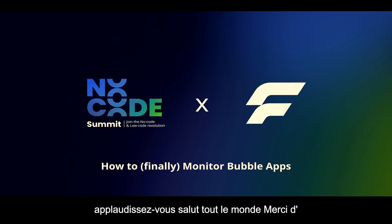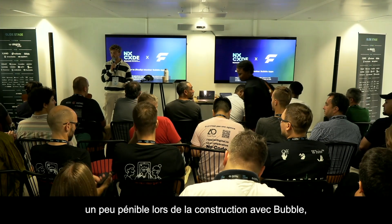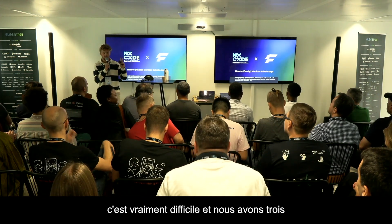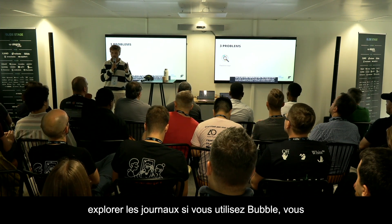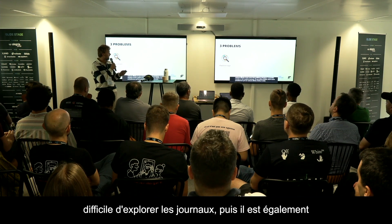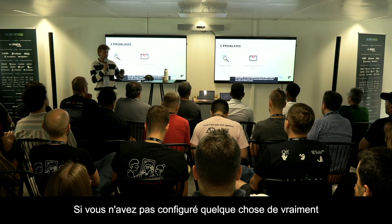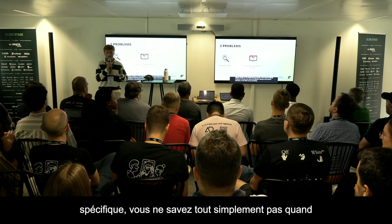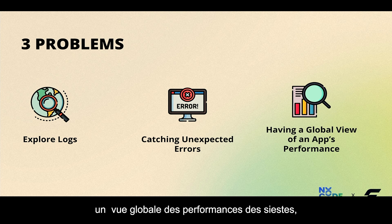Hi, everyone. Thanks for attending this talk. Today I'd like to talk about how to finally monitor a Bubble application. We know it's kind of a pain when building with Bubble — it's really hard. We have three main problems: the first is exploring logs, which is really hard to do in the Bubble Logs tab. The second is catching unexpected errors — if you didn't set something specific up, you just don't know when your users face errors. And the third is having a global view of an app's performance.